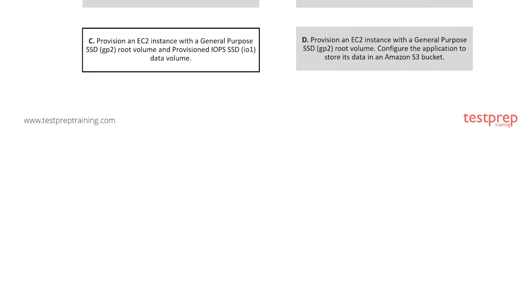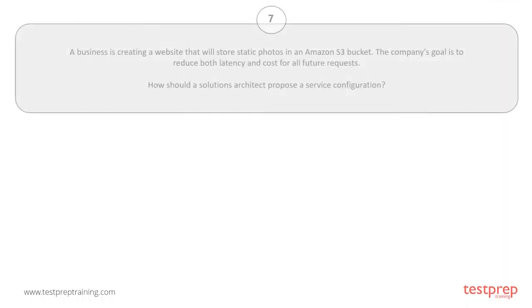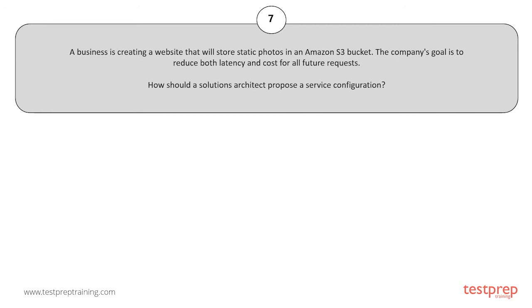Question number seven: A business is creating a website that will store static photos in an Amazon S3 bucket. The company's goal is to reduce both latency and cost for all future requests. How should a solutions architect propose a service configuration?